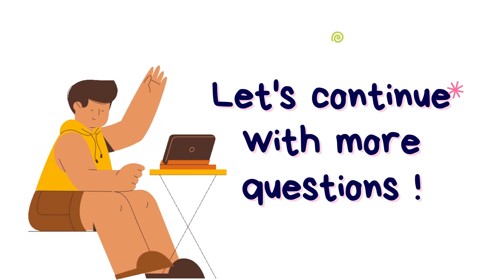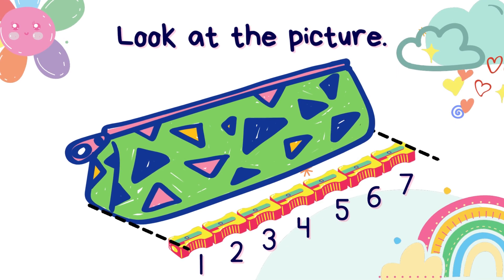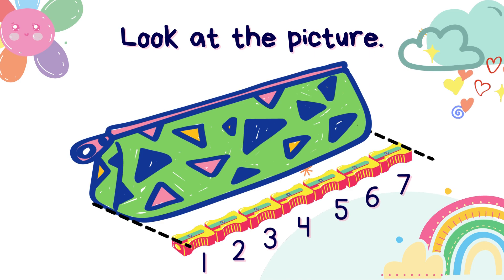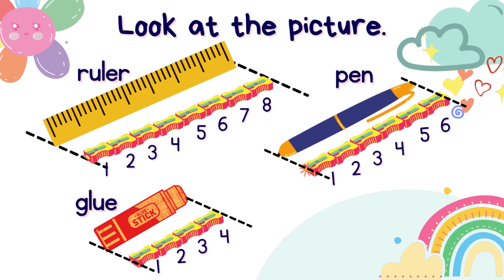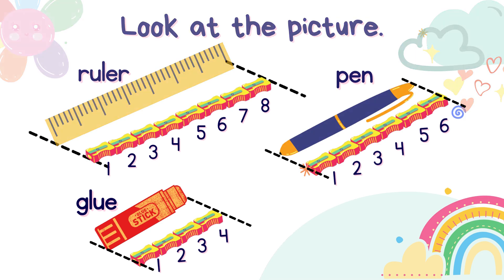Now, let's continue with more questions. Look at the picture. We have a pencil case with the length of 7 sharpeners. Now look at these objects: a ruler with the length of 8 sharpeners, a pen with 6 sharpeners, and glue with 4 sharpeners.